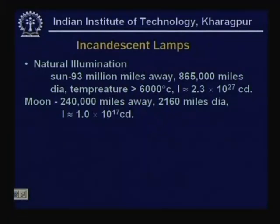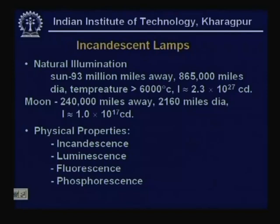The next most important natural light source is the moon, which reflects sunlight. It is about 240,000 miles from Earth, with a diameter of about 2,160 miles, and its luminosity is estimated at 1 × 10¹⁷ candela. Artificial sources aim to achieve similar light conditions for all our activities. In doing so, we employ one of four physical properties: incandescence, luminescence, fluorescence, and phosphorescence.